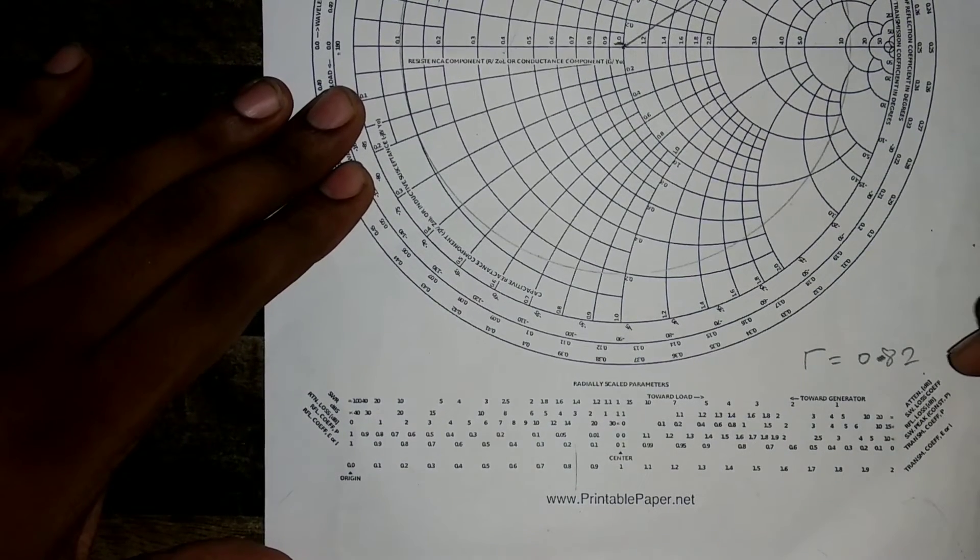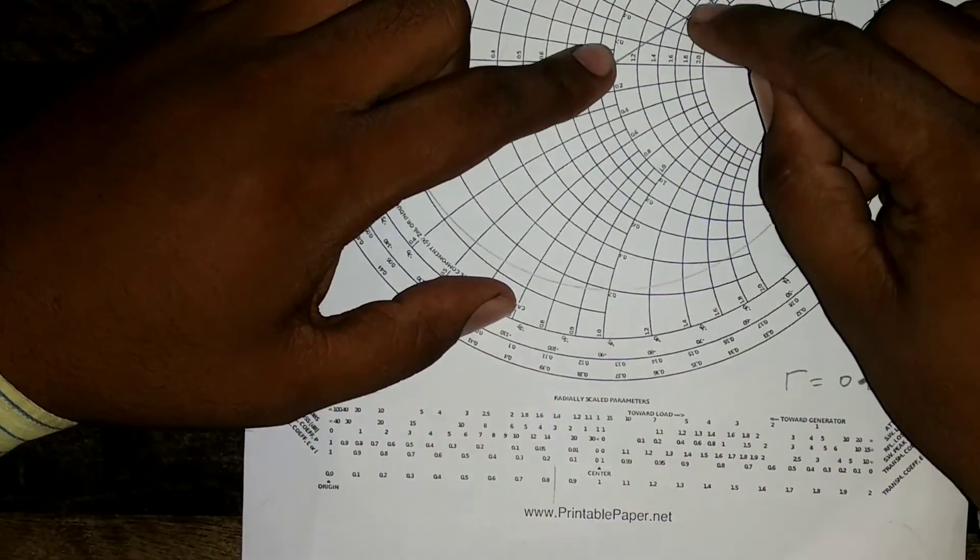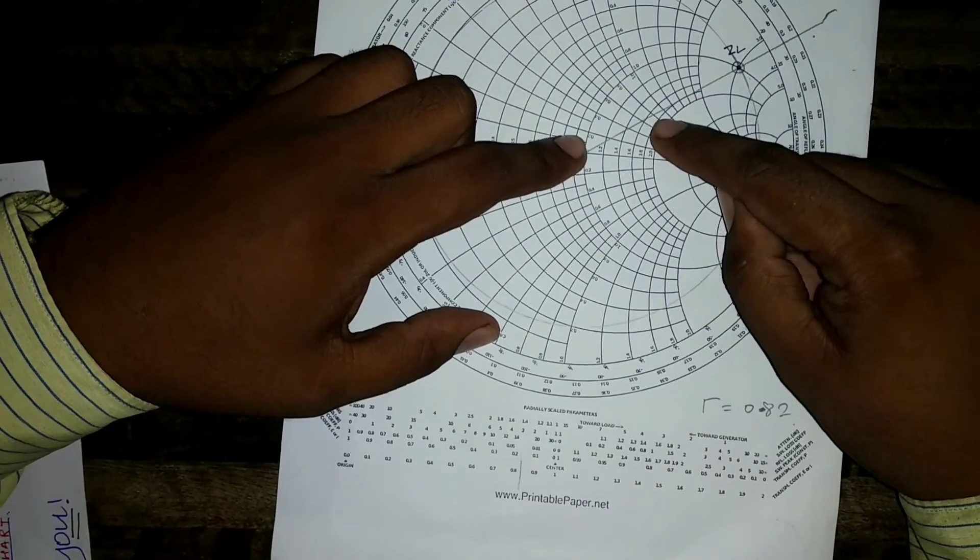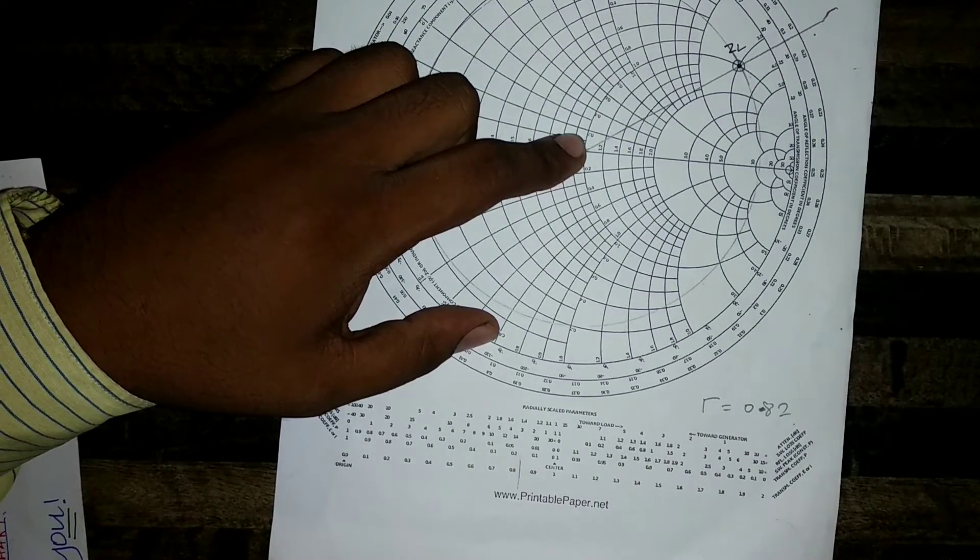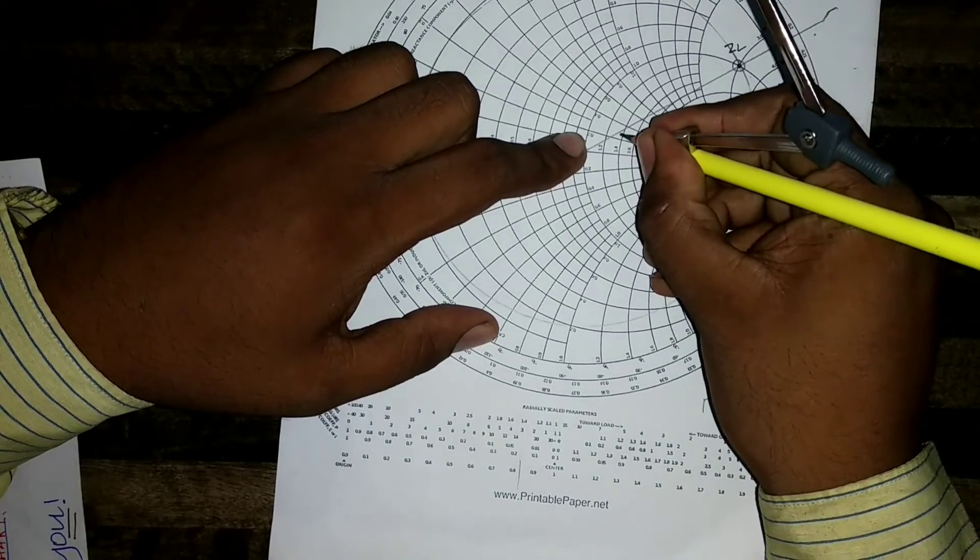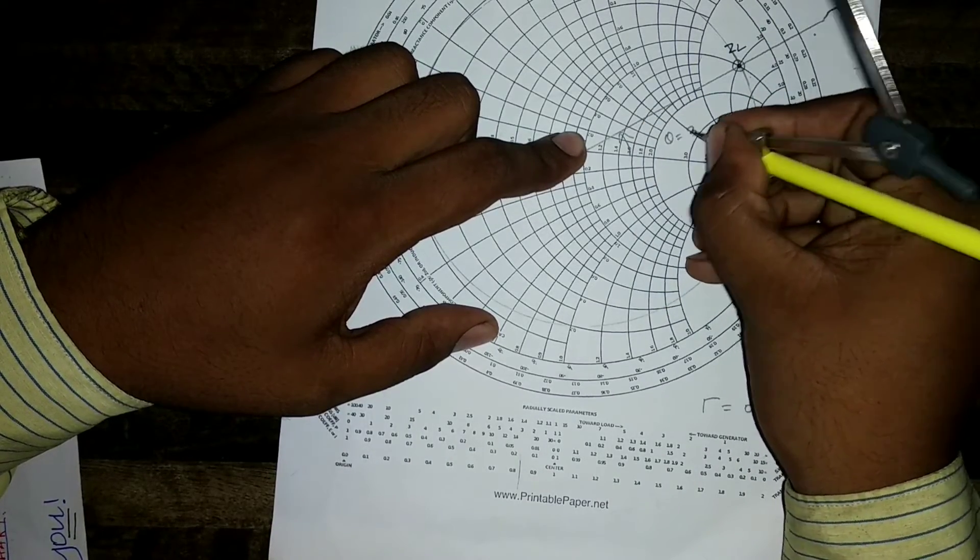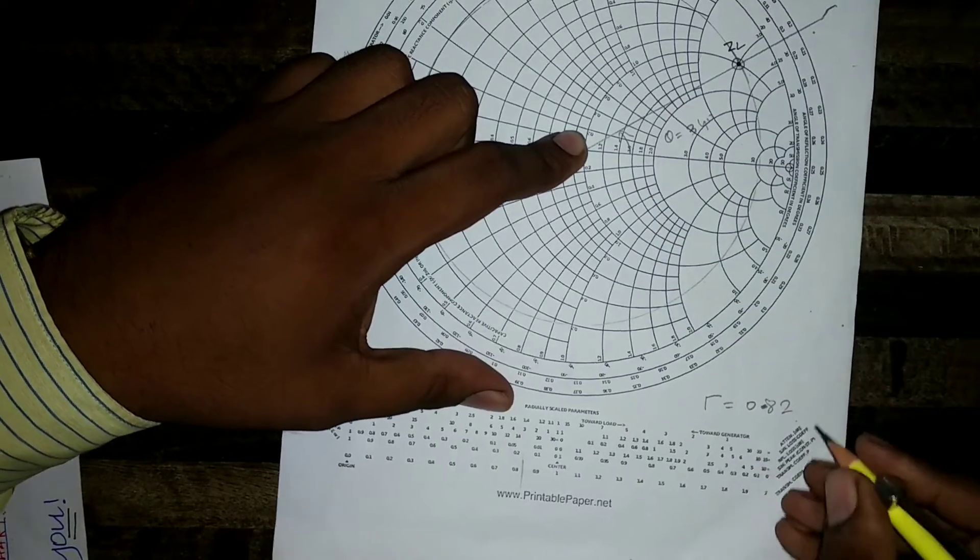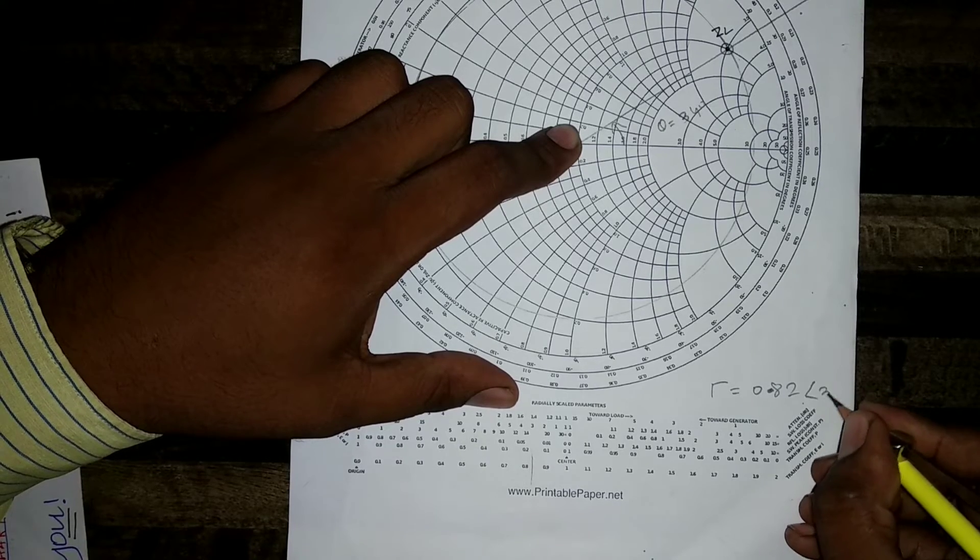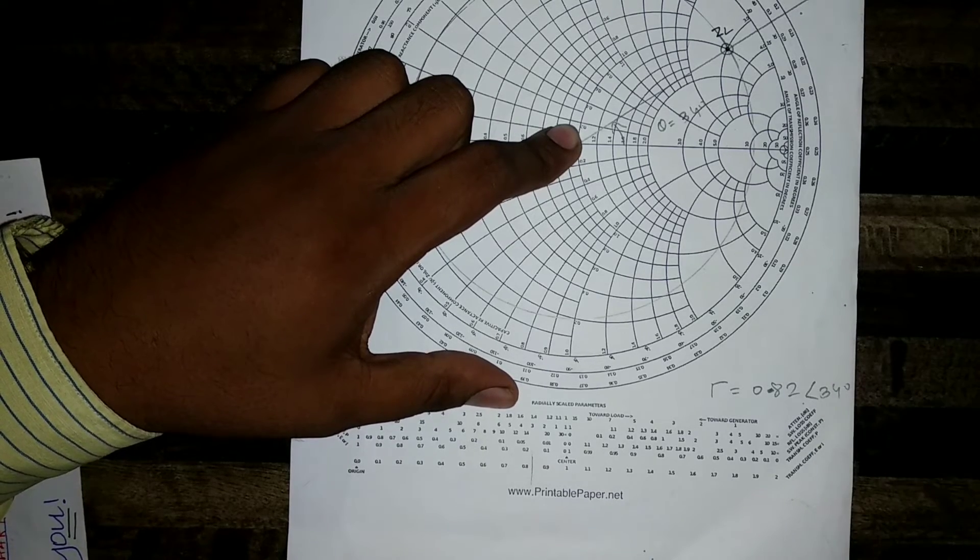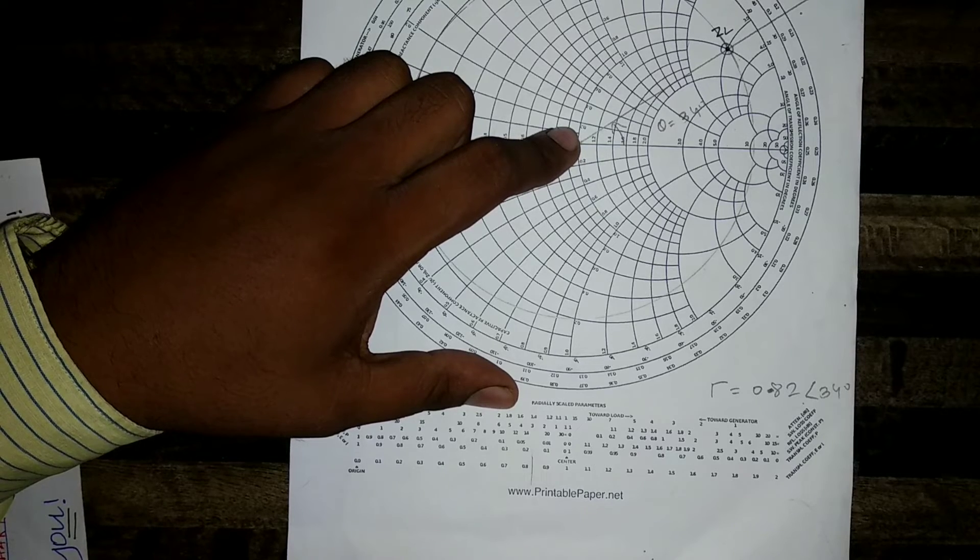I also get to know the direction of this. So I can get this by measuring the distance by measuring the distance from the center line and this ZL line. Now this gives me the angle. This comes out to be theta is equal to you can measure out using D 34 degree. Therefore, my reflection coefficient is 0.82 angle 34 degree. Hope you would have understood how to find out the reflection coefficient.